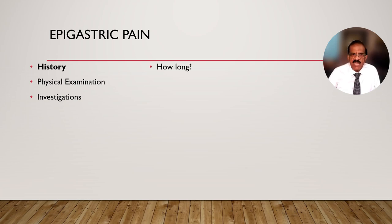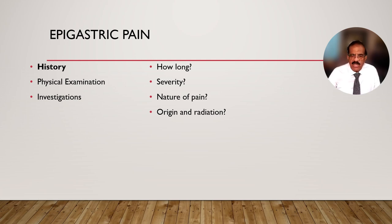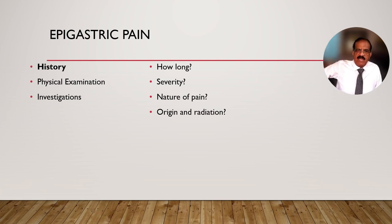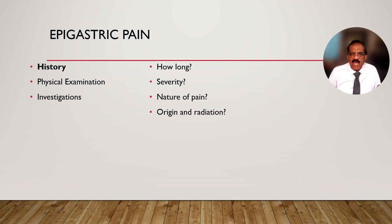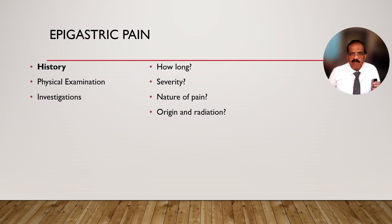Again, you use three modalities: history, physical examination, and investigation. In history, ask how long the pain has been present, its severity (mild, moderate, or severe), the nature of the pain (burning, nagging, or colicky), and origin and radiation. Sometimes pain starts in the epigastrium and radiates to the back; sometimes it starts in the right hypochondrium and radiates to the back. These descriptions give important clues. Young physicians sometimes miss epigastric pain arising from biliary colic because the pain is central and they assume it is stomach-related.